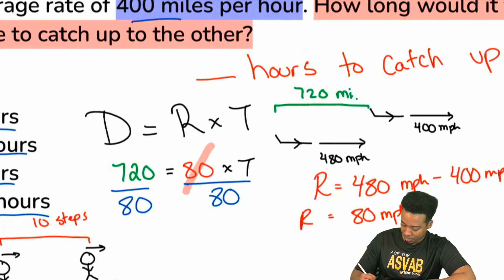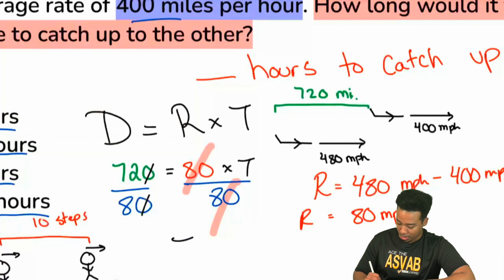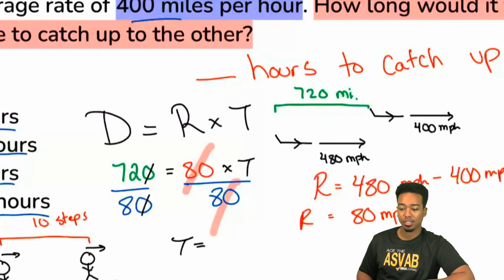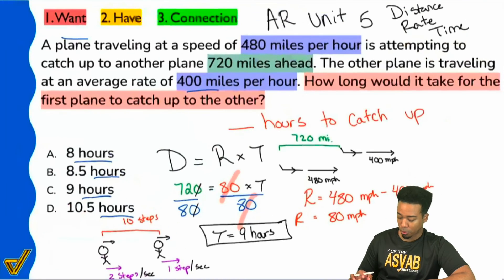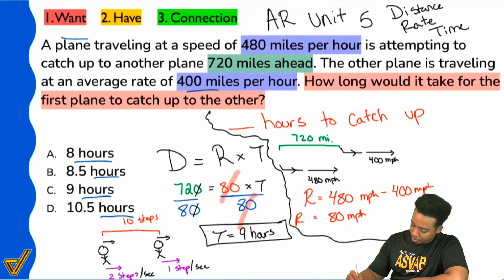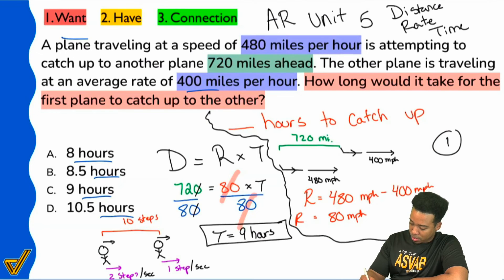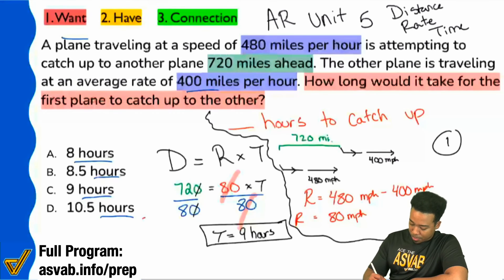720 divided by 80 — we can cancel out the zeros: 72 divided by 8 equals 9. So it'll take nine hours for the first plane to catch up to the other. Step one was reading the question, and step two was setting up and solving the equation.